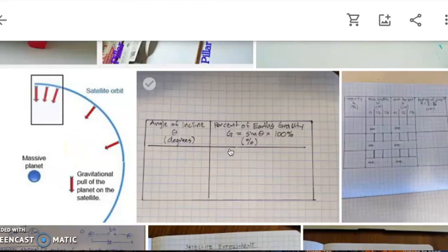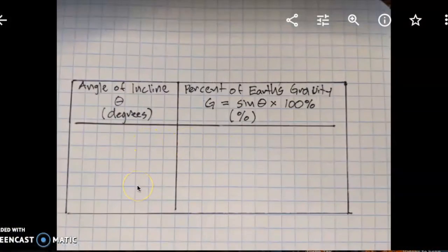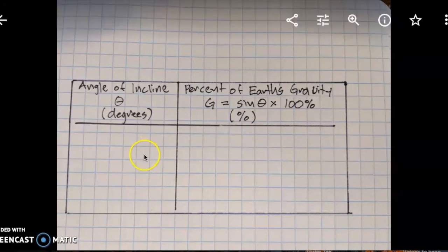So this is how I would record my data. Now I chose three different angles. You could choose different angles than me. Depending on how fast your marble is going and your experimental setup, you may find different angles that work better. So whatever the angles that you chose should go in this column.